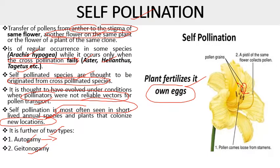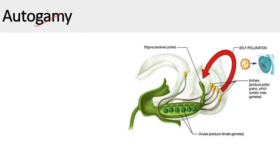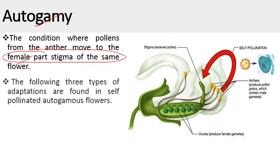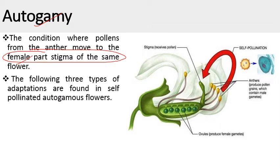Autogamy is the transfer of pollen from within the same flower to the stigmatic surface. In geitonogamy, pollen grains are transferred from one flower to another flower of the same plant. So, autogamy: 'auto' means self, 'gamy' means marriage — the condition where pollen from the anther moves to the stigma of the same flower. The following three types of conditions are found in self-pollinated or autogamous flowers.